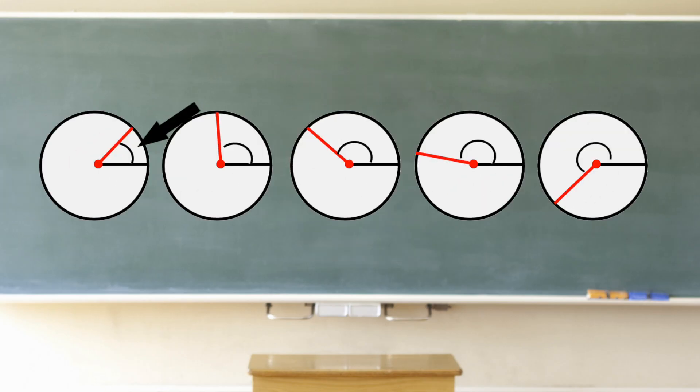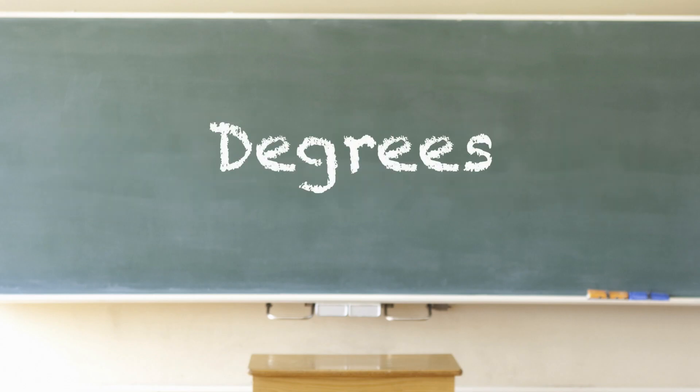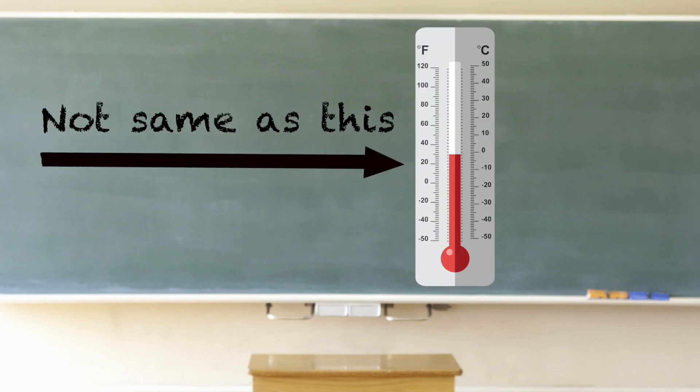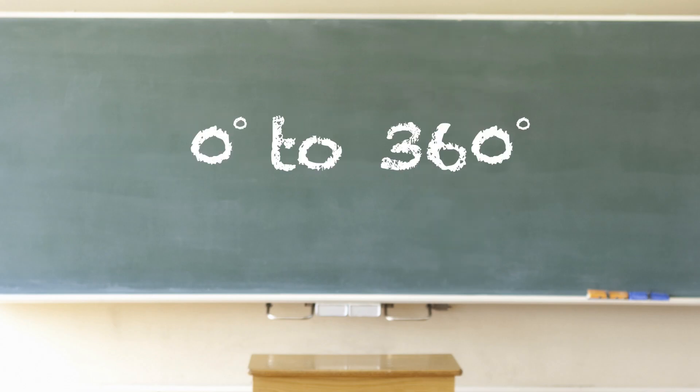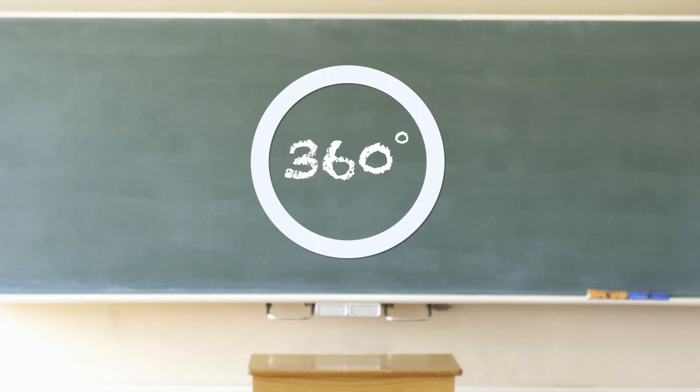One thing you may notice immediately is that angles come in different sizes. The size of an angle is measured using a unit called degrees. This is not the same as measuring temperatures. An angle can have any measurement from zero to 360 degrees. A complete circle is also 360 degrees.